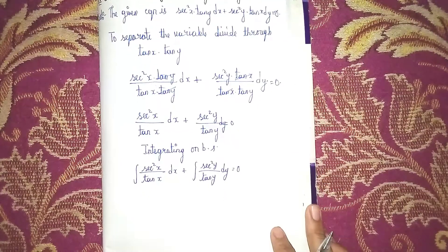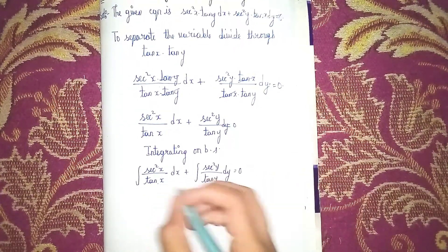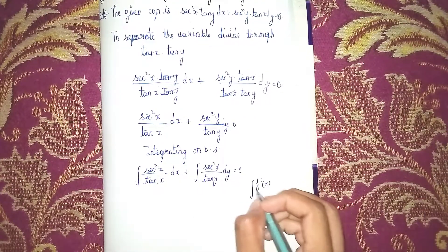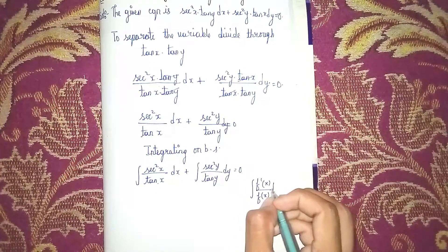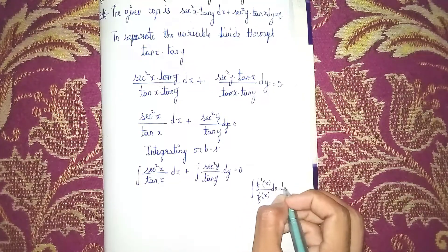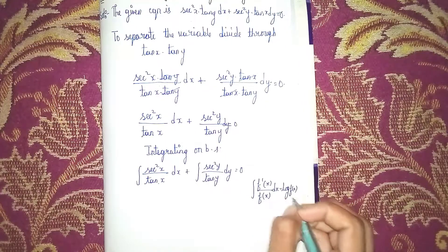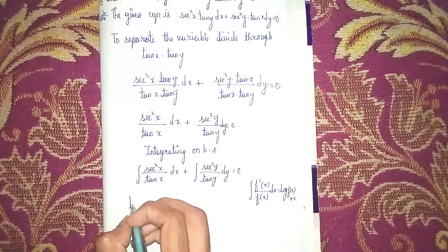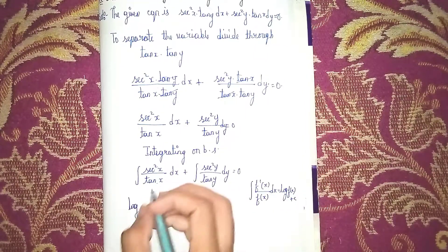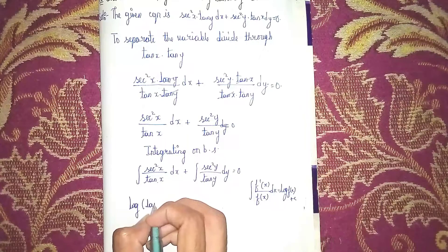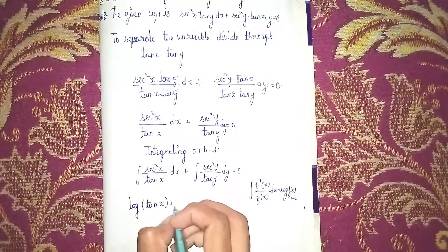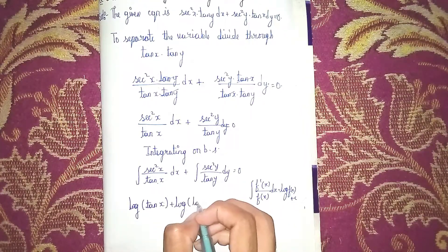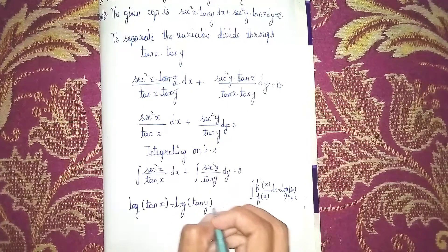We are using the formula: the integral of f-dash of x over f of x dx equals log of f of x plus C. Applying this to both integrals, the denominator tan x gives log of tan x, and similarly log of tan y.